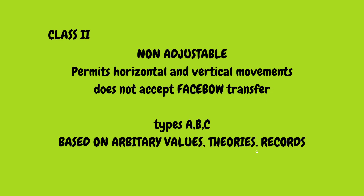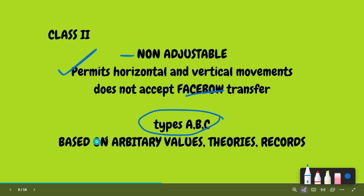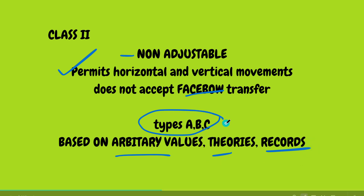Class 2 articulator comes in three types. It permits horizontal and vertical movements. It does not accept face-bow record — that is a disadvantage. The mean value articulator, which we commonly use, is also a class 2 articulator. It is non-adjustable. The three subtypes are based on arbitrary values, arbitrary theories, or records — designated as type A, B, or C.